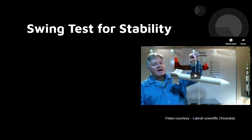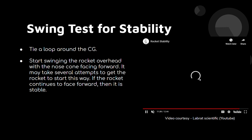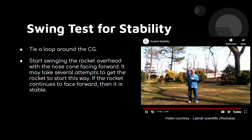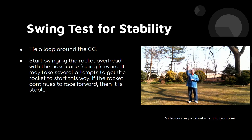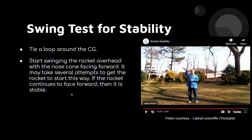This is a famous test known as the swing test for stability. A cord is tied around the CG point of the rocket. You can see in the video that the rocket moves nose-forward — the nose cone points in the direction of the flight path. If your rocket is not stable, it will try to topple or the nose will try to go backwards. But if it is stable, it will move exactly as shown. Check out the Lab Rat Scientific channel for more videos on model rockets and their stability.